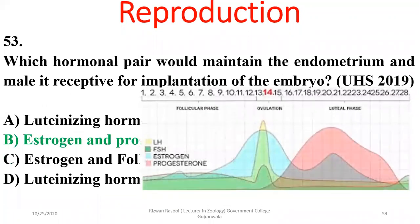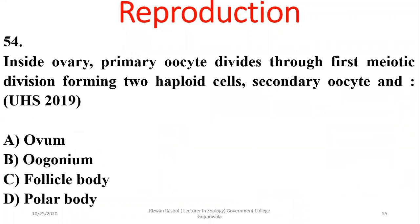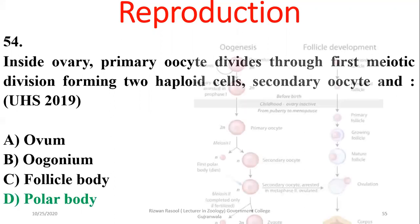Estrogen causes thickening during the follicular phase and progesterone acts during the luteal or secretory phase. Question 54: The primary oocyte divides through the first meiotic division forming two haploid cells — the secondary oocyte and a smaller polar body.